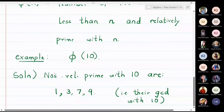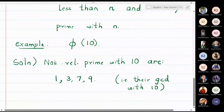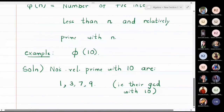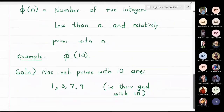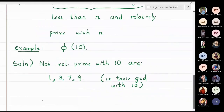The GCD of 1 and 10 is 1, the GCD of 3 and 10 is 1, the GCD of 7 and 10 is 1, and the GCD of 9 and 10 is also 1. So we got 4 positive integers, and therefore phi of 10 is equal to 4.